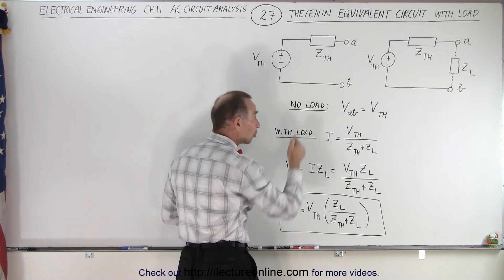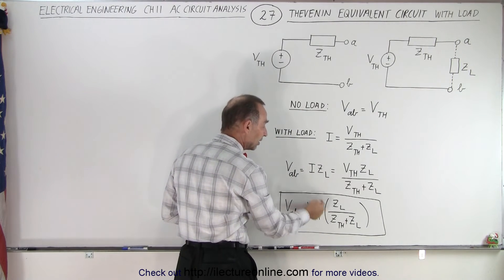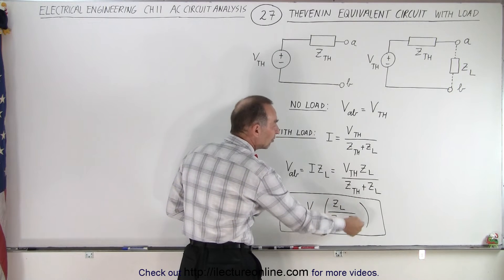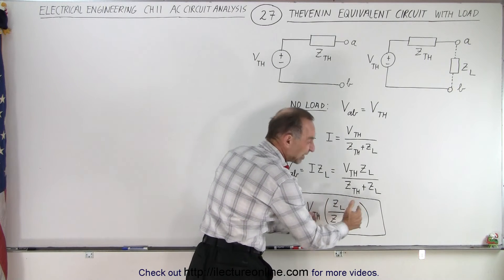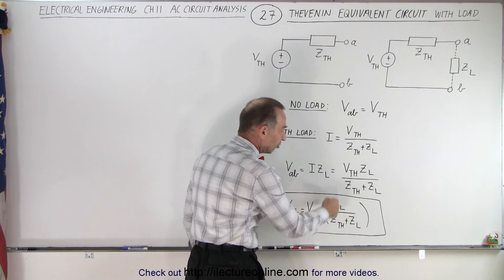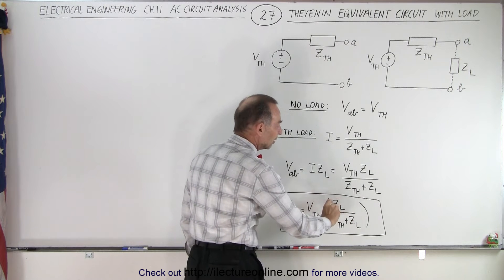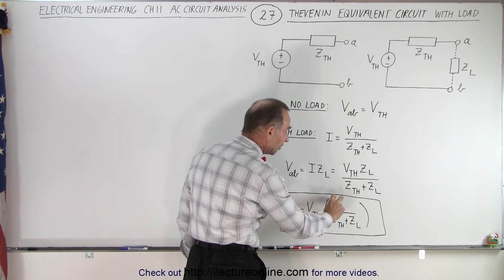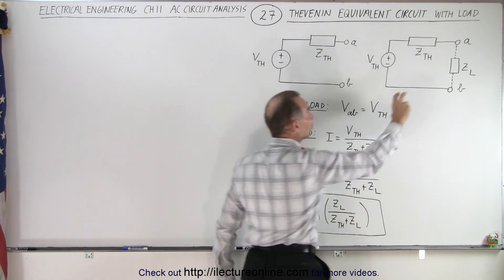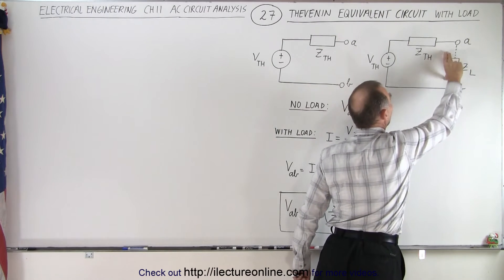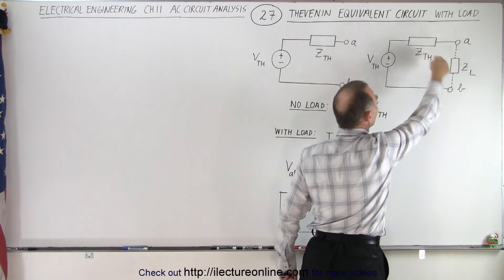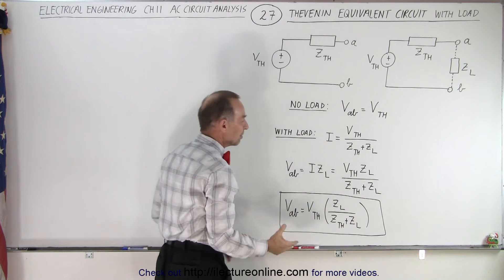Essentially, the voltage across the load from A to B will be the Thevenin voltage times this component right here, which essentially is a voltage divider. It's the portion of the voltage of the source that's dropped across the load as compared to the voltage that's dropped across both of the impedances.